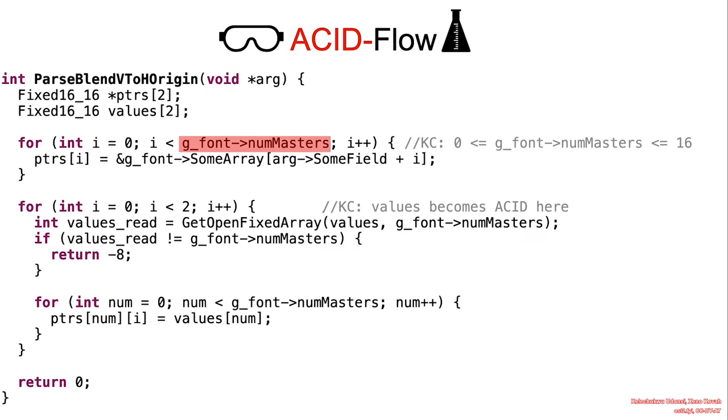First, in general, the parseBlendV2HOrigin function attempts to initialize the two declared array variables, pointers and values.